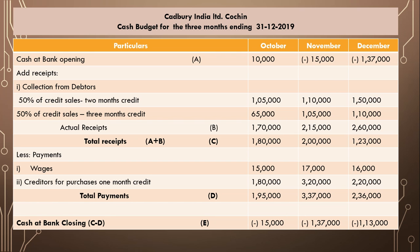For November: the overdraft of 15,000 is deducted from actual receipts of 2,15,000, giving total receipts of 2,00,000. Deducting total payments of 3,37,000 gives an overdraft of 1,37,000, carried forward to December. Similarly, the closing balance for December is an overdraft of 1,13,000. This is the overdraft facility Cadbury India Limited is planning to avail from Bank of India.